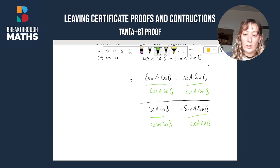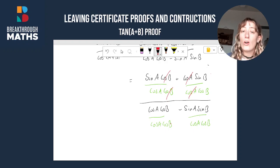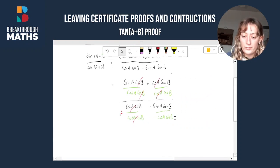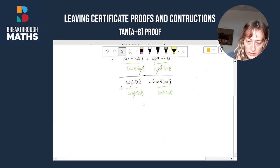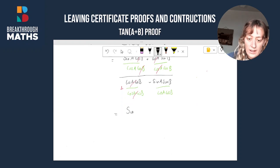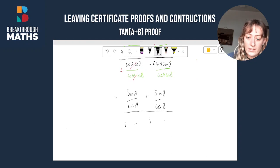Let's do some simplification now. Looking at our first term, we have a cos b up here and a cos b down there — we can cancel them. Over here we have a cos a on top and a cos a at the bottom — gone. Here we have cos a·cos b all over cos a·cos b — they cancel, leaving us with just a one. Here we have sin a and cos a — nothing cancels; sin b and cos b — nothing cancels. So let's rewrite our expression. Now we have sin a over cos a plus sin b over cos b, all over one minus sin a over cos a multiplied by sin b over cos b.